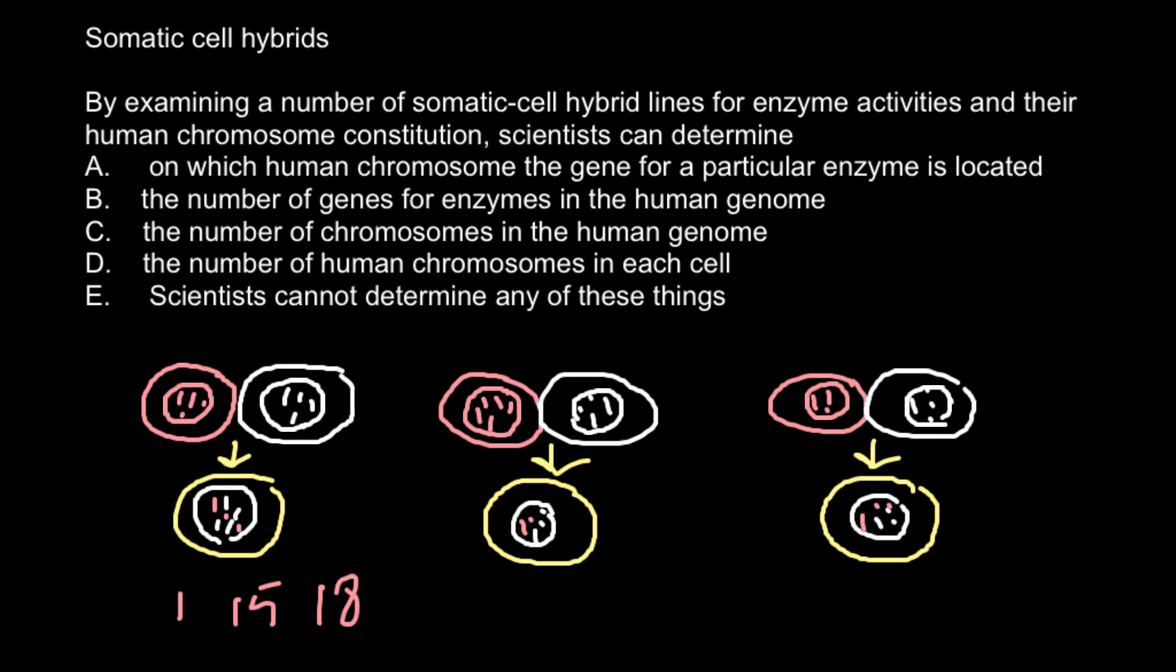Usually in human and mice hybrid, human chromosomes would be lost and only a few would be left. And here in the next cell line we have chromosome 15, and we have chromosome 11 and 9. And in the last cell line we have chromosomes 2, 6, and 15.